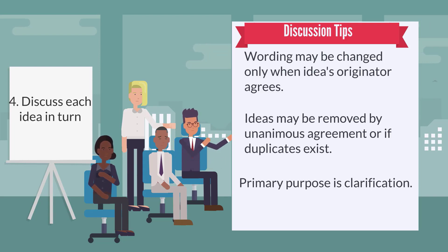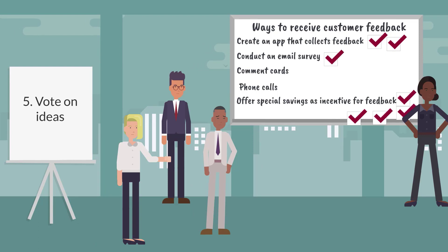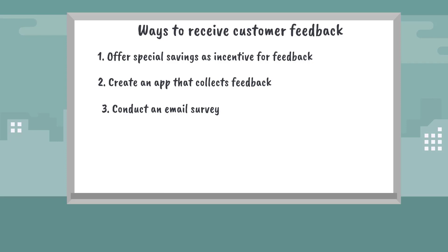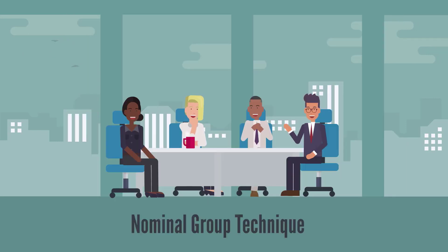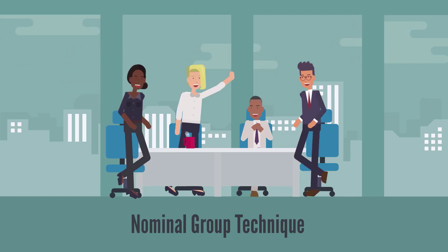The primary purpose of the discussion is clarification, not to resolve differences of opinion. All participants will then vote on the ideas. Make sure to clarify the number of votes and the point system. The group now has a list of prioritized choices that can either be evaluated or enacted. The Nominal Group Technique ensures that all team members contribute and creates a ranked list of solutions.